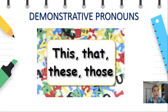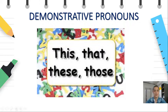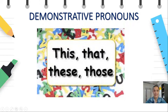The four demonstrative pronouns are this, that, these, and those. You can see them over here. Pay attention on the pronunciation: this, that, these, those.